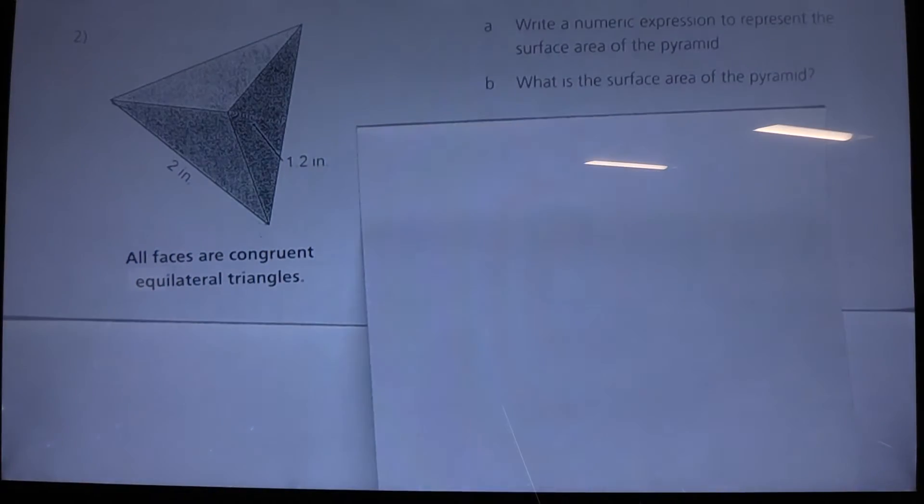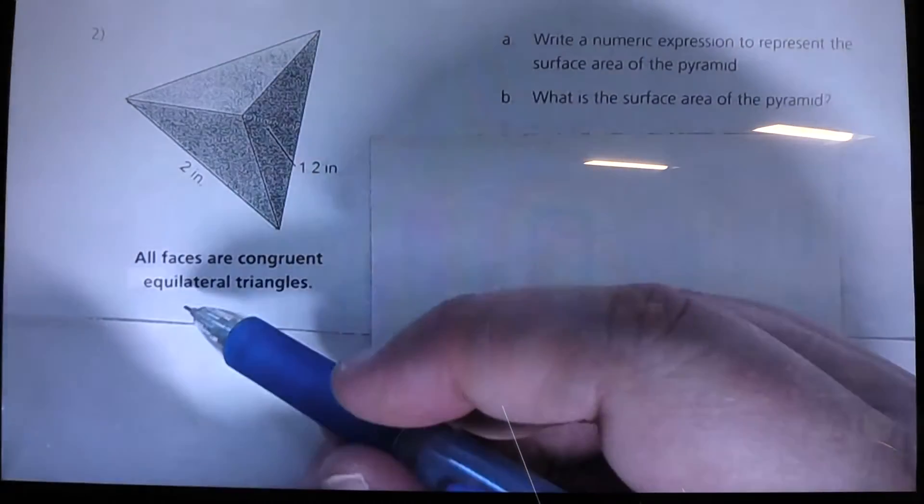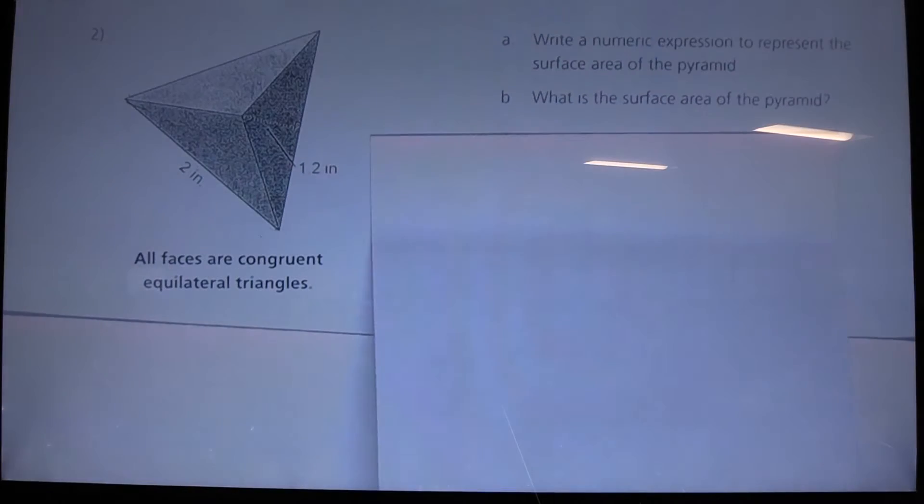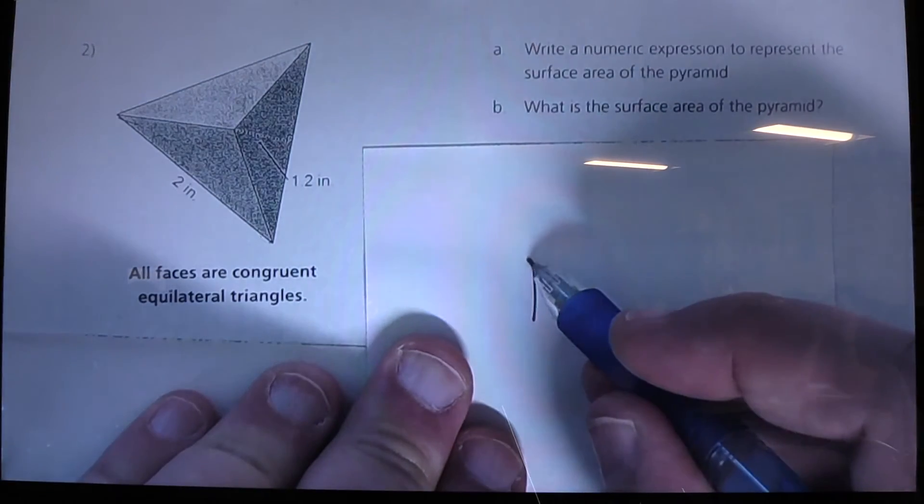Now if we have an image like this, and it tells us all faces are congruent equilateral triangles, then I know that I need to come up with a triangle for a base.